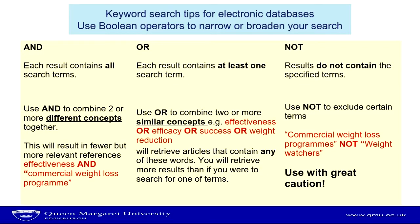First of all we have the operator AND, and as you can see all these operators are written in capitals — that's how you use them in a database. The operator AND means that we want the database to retrieve results containing all the search terms. We use AND to combine two or more different concepts together, and it means that we'll get fewer but more relevant references.